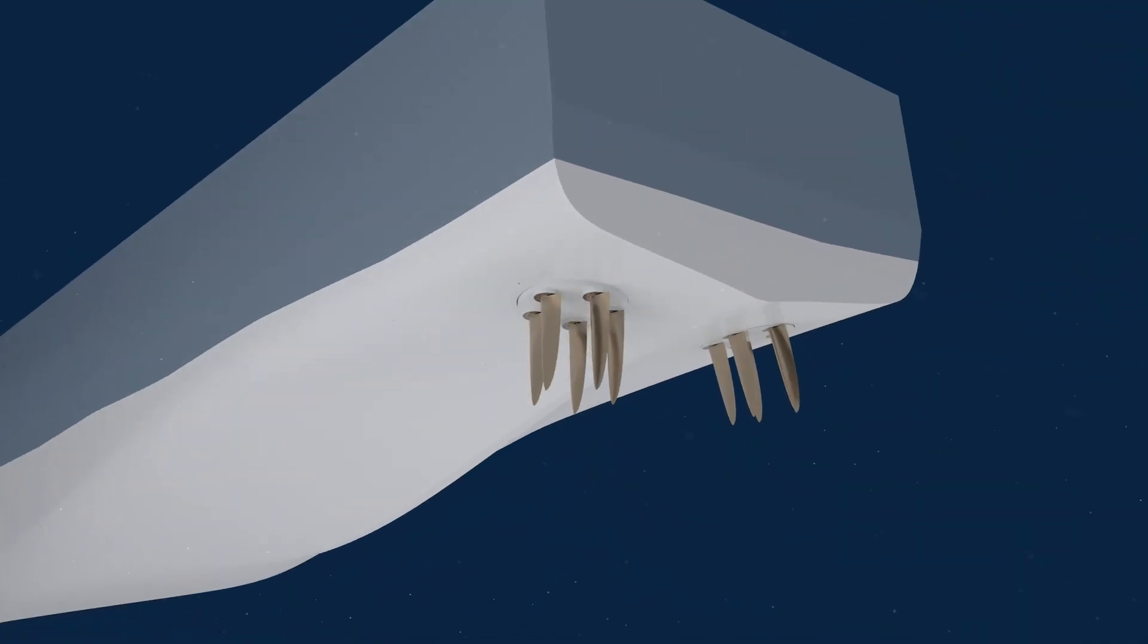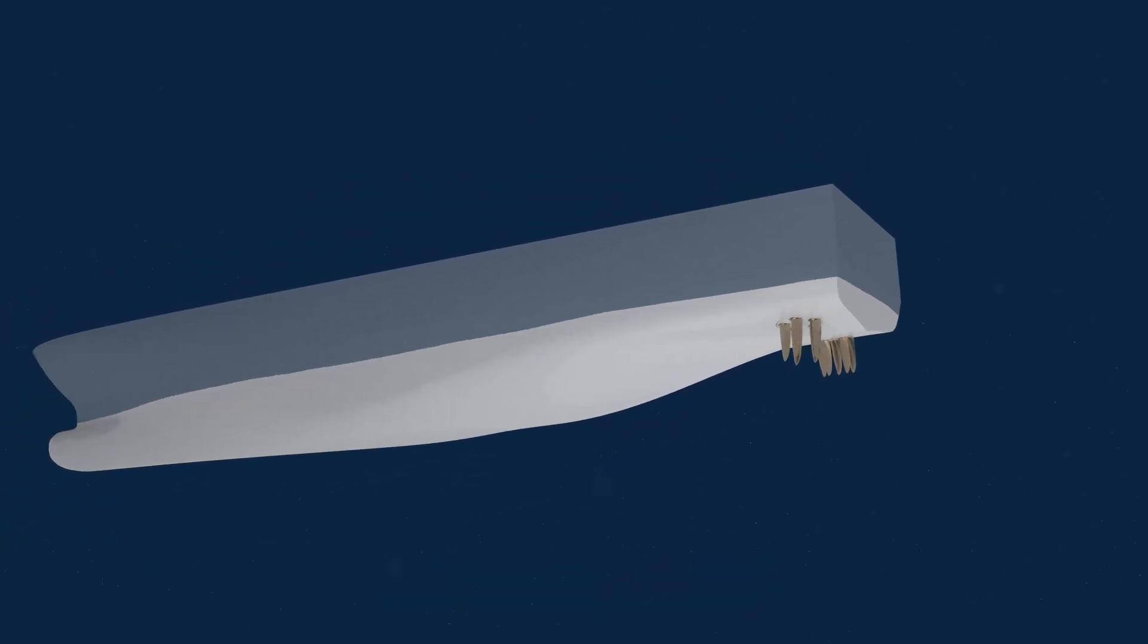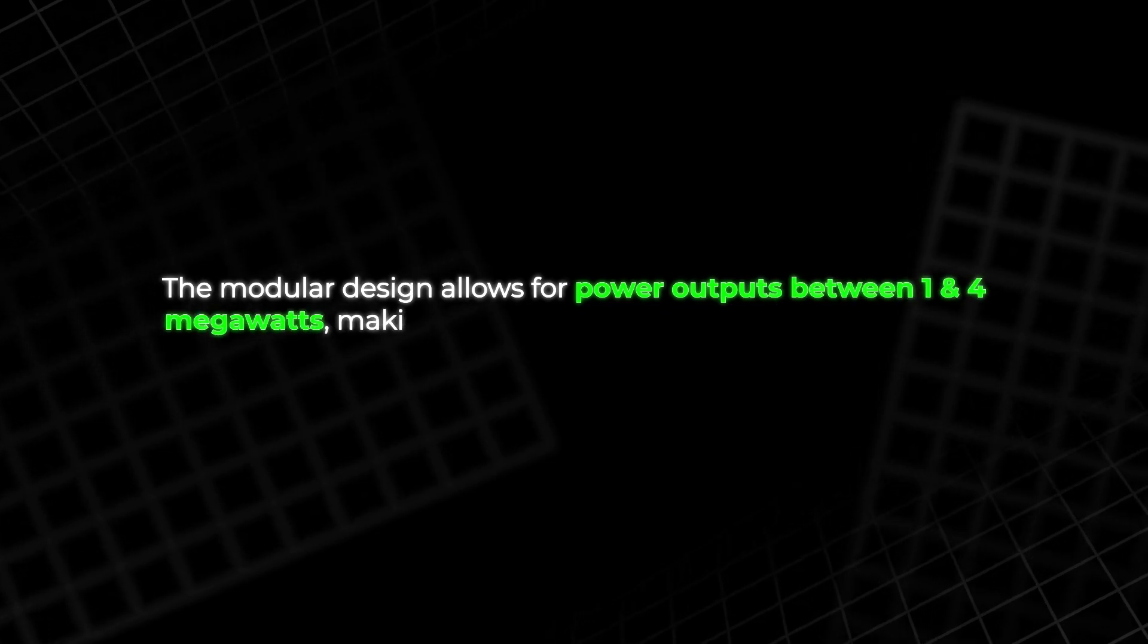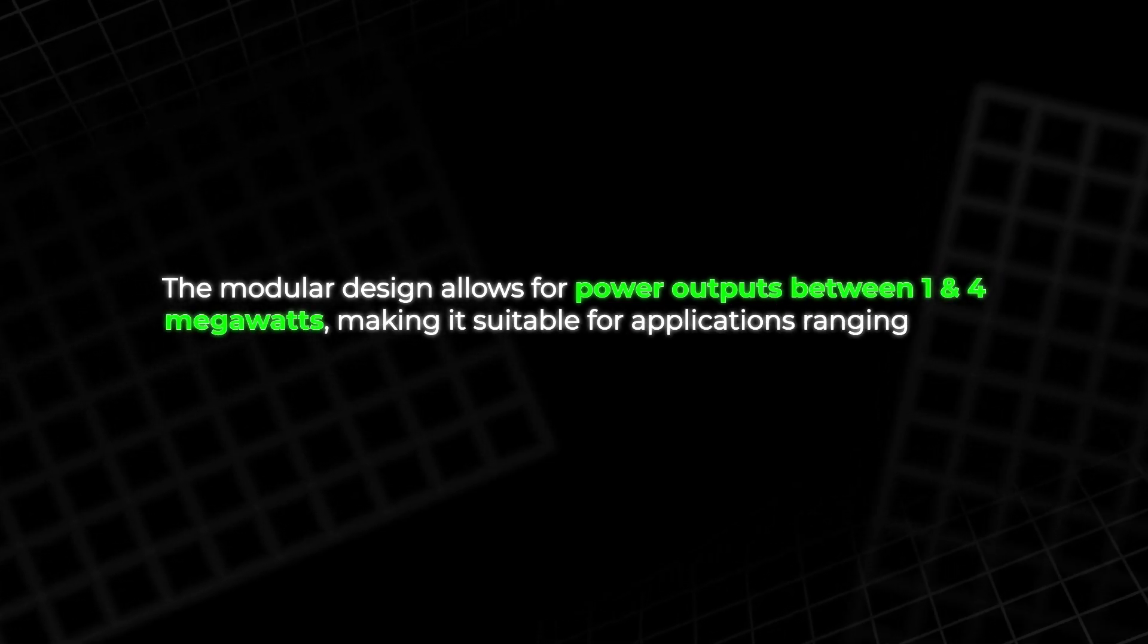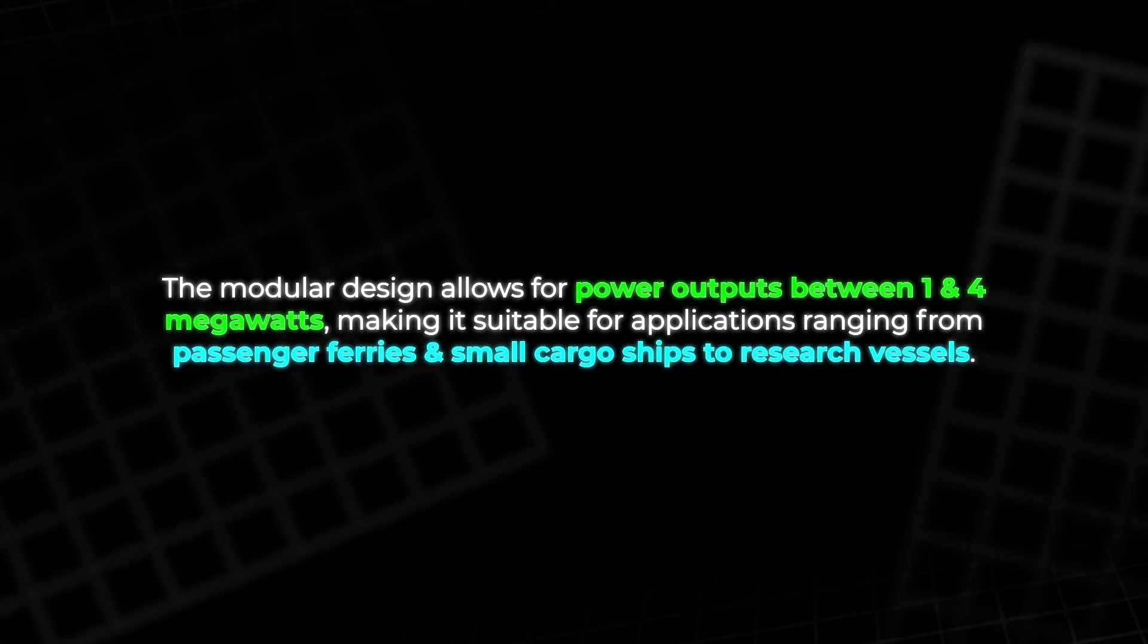In trials, ABB's model achieved speeds of up to 18 knots, which is very impressive for this kind of technology. The modular design allows for power outputs between 1 and 4 megawatts, making it suitable for applications ranging from passenger ferries and small cargo ships to research vessels.